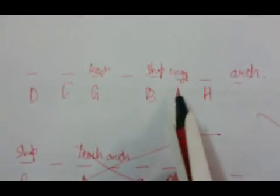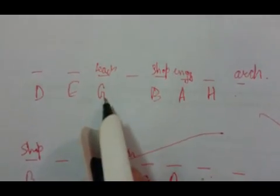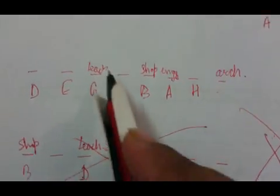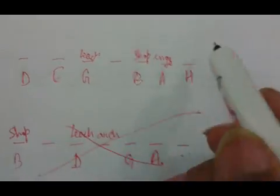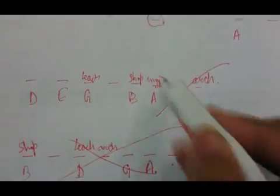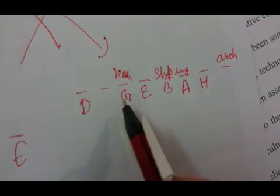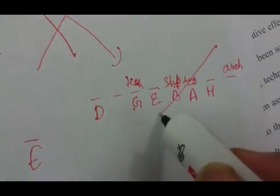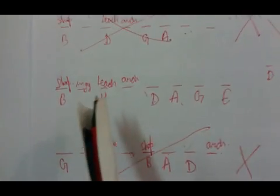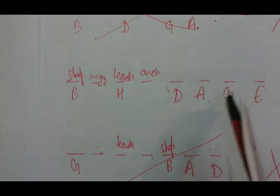Next statement: engineer sits third to the right of clerk. In the first sub-case, teacher is already sitting in the clerk's required position — cancelled. In the second sub-case, teacher is again sitting where clerk would need to be — cancelled. Only one case remains. We check: engineer sits third to the right of clerk — one, two, three — so clerk is sitting here.